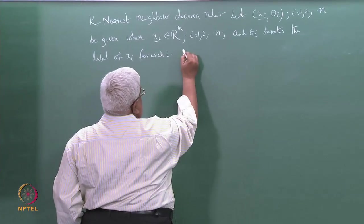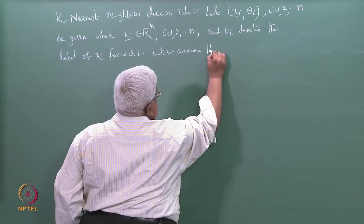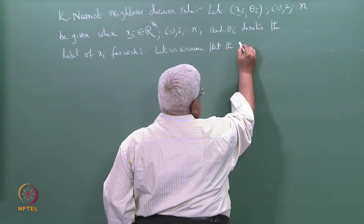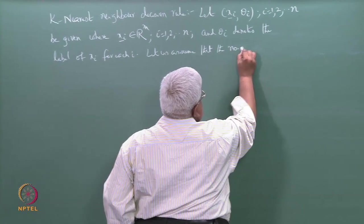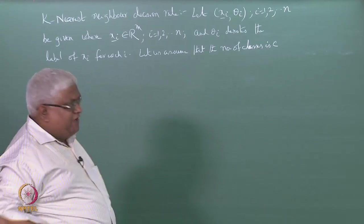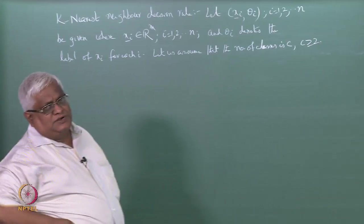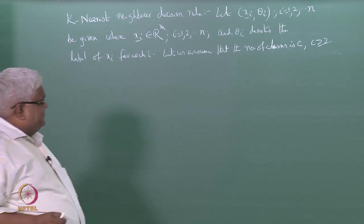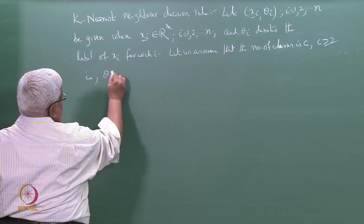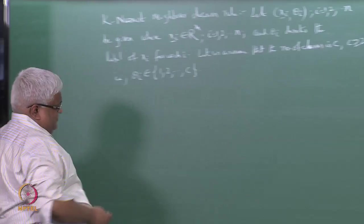Let us assume that the number of classes is c, where c is an integer greater than or equal to 2. That means each theta i can take values from the set {1, 2, ..., c} for all i.